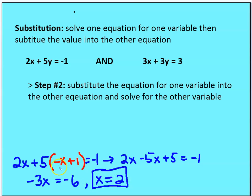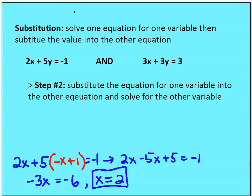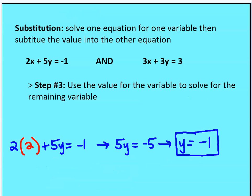So you can see the work: 2x plus 5 times (negative x plus 1). I end up with 2x minus 5x plus 5 equals negative 1. Solving for x, I get x equals 2. Now I take that value and substitute it into either of the two equations to solve for y. Substituting x equals 2 back into the first equation: 2 times 2 plus 5y equals negative 1. So 5y equals negative 5, and y equals negative 1.